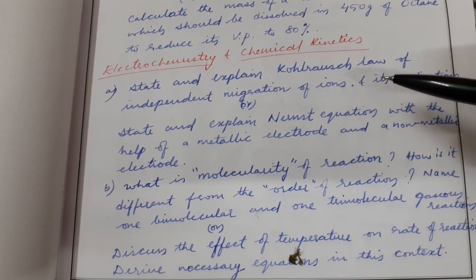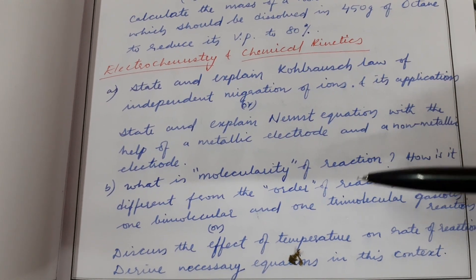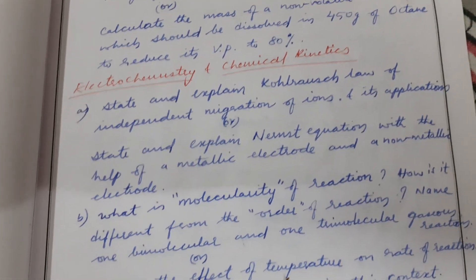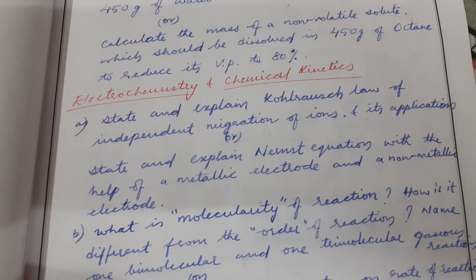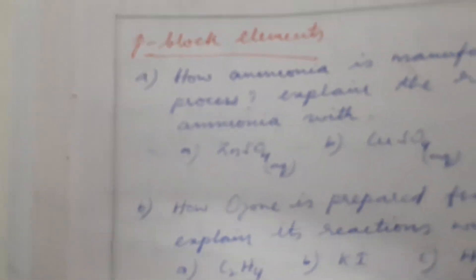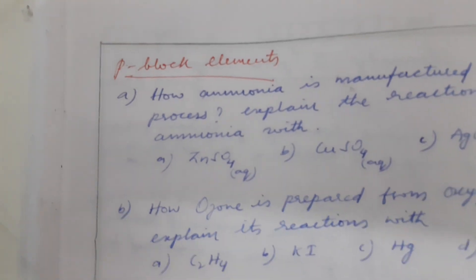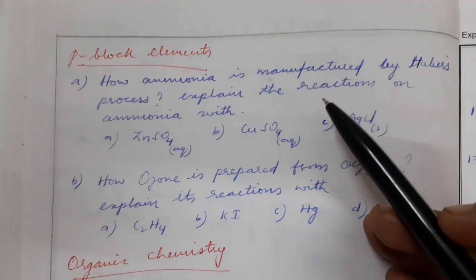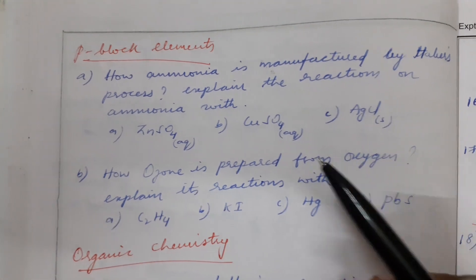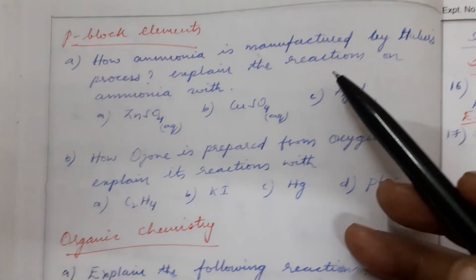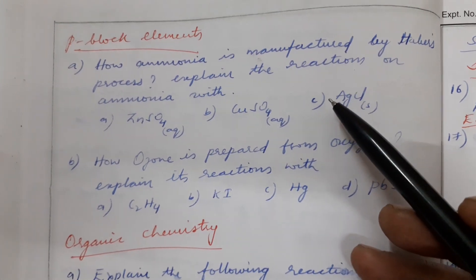So internal choice is there — one, two, three, four questions are given here. Move on to the next page. Next chapter: T-block elements. Second year chemistry we have been discussing. Tomorrow afternoon we have the exam in TS, and after two days in EAP. So these are the questions.